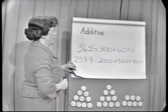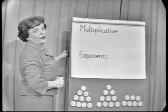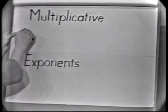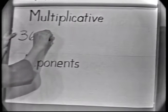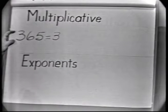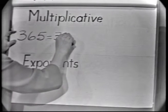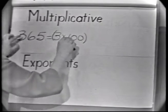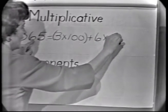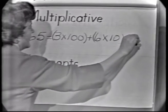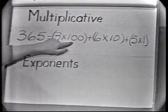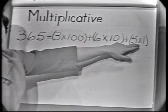Another feature is that of the multiplicative idea — expressing these numerals using multiplication. Let's return again to 3, 6, 5. We can think of this not as three hundred, but as three times one hundred, plus six times ten, plus five times one. The number of one hundreds, the number of tens, the number of ones.